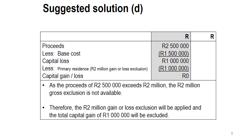Scenario D: proceeds of 2.5 million, base cost of 1.5 million, leaving a capital gain of 1 million rand. The first 2 million rand of any capital gain or loss on a primary residence will be excluded, so we exclude that full 1 million rand. Take note — you can't go into a negative here. You can't do 1 million minus 2 million equals negative 1 million. We limit the exclusion to the actual gain, which is 1 million.